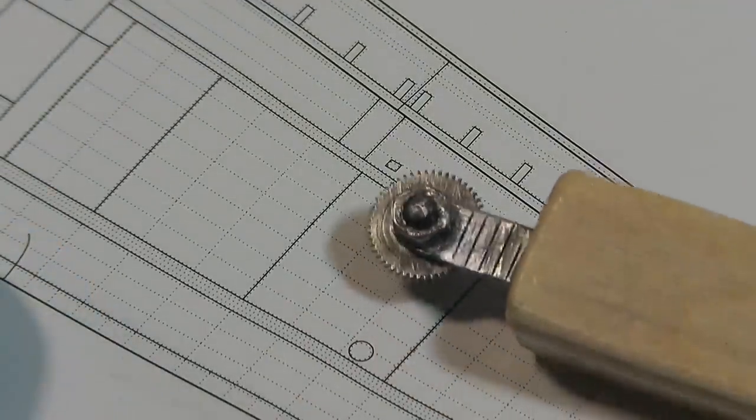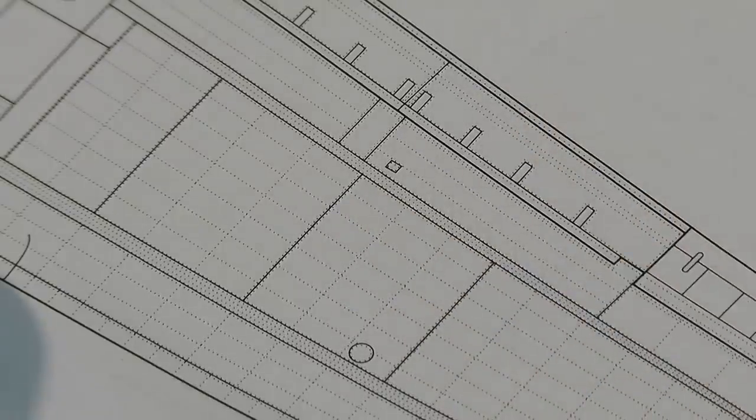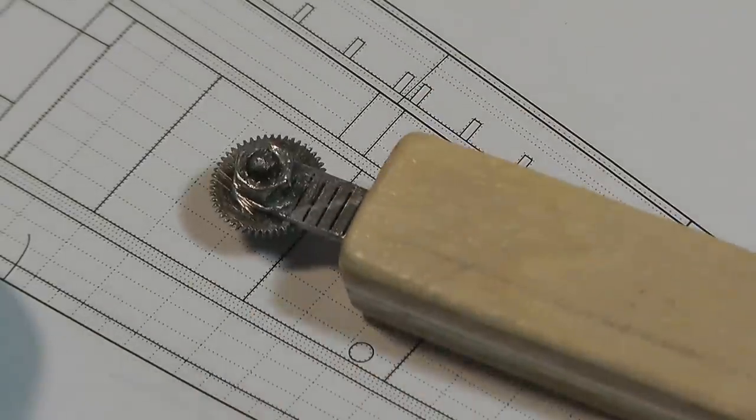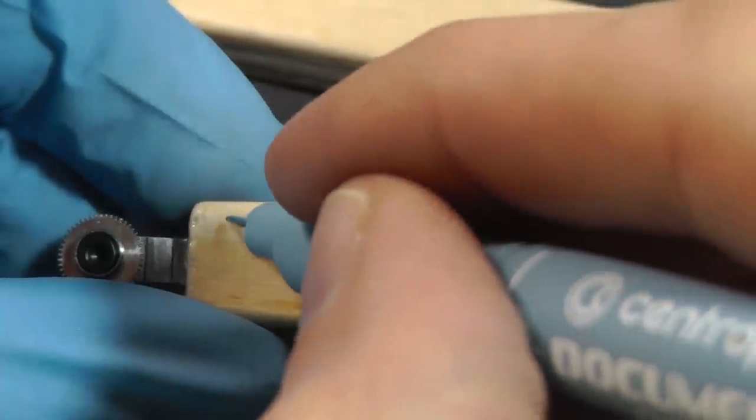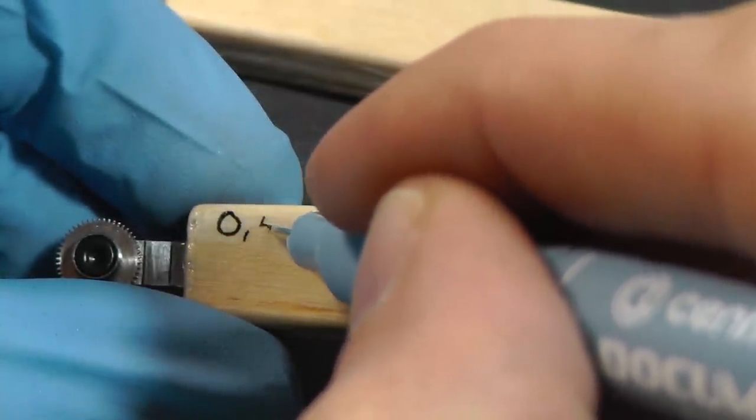I have some blueprints for 1:72 and 1:48 scale models. Correct is to use 0.5 tooth pitch for 1:72 scale. The 0.7 is primarily for 1:48 but again you can combine them together.